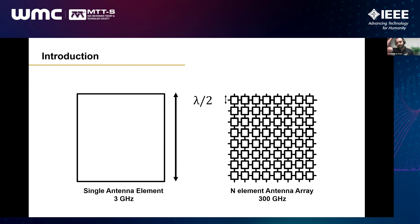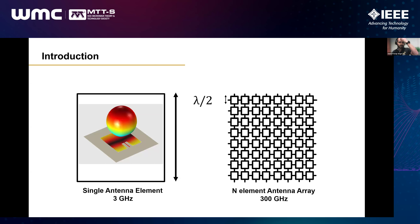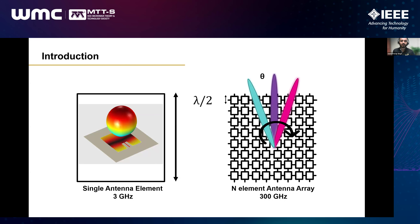Phased arrays increase the aperture area and achieve gain. However, at 300 GHz your radiation pattern from a single antenna is very wide, covering a large beam width. When you go to an antenna array, the beam becomes very narrow, meaning you may not cover the range or angle you want. That's where the role of the phased array comes in — you need to steer the beam to deliver information to the target point.